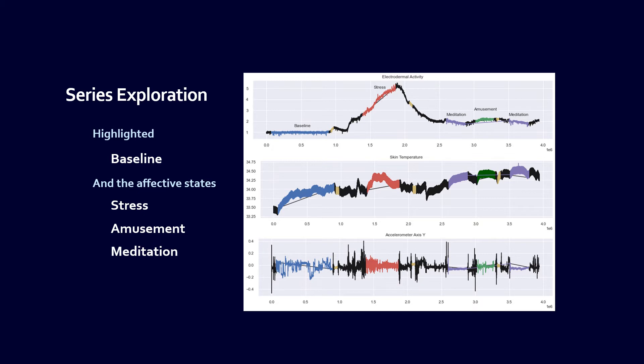Wrist sensor attributes also found in the chest device included the accelerometer, electrothermal activity, and skin temperature. These plots show the sensor series. It's highlighted baseline, stress, meditation, and amusement. There is a steep rise in electrothermal activity during the stress phase. Looking at the series plots helped to grasp what was occurring and helped with discovery.